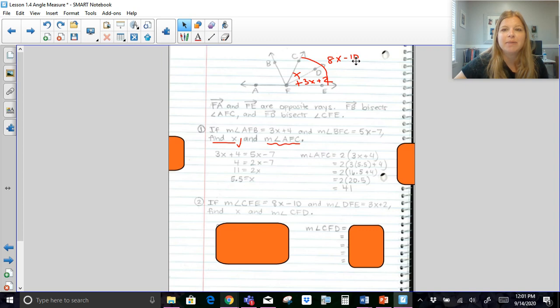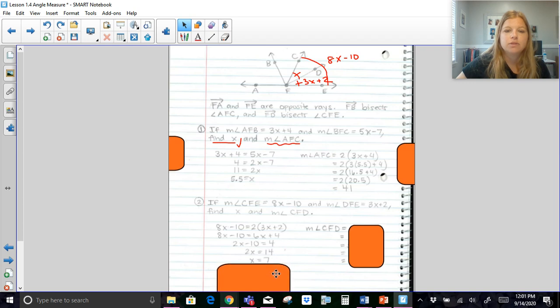I know that if this is 3X plus 2, then this also has a measure of 3X plus 2. And that those together should be equal to 8X minus 10. I also could say that 8X minus 10 is equal to 2 times 3X plus 2. Or I could even say that 3X plus 2 is equal to half of 8X minus 10. I chose to do that 8X minus 10 is equal to 2 times 3X plus 2. So twice it. So this entire angle is worth double that half angle. Do your solving for X, just basic algebra work, and we get X equals 7.